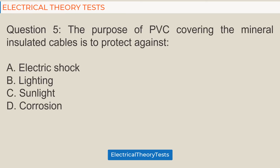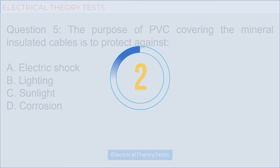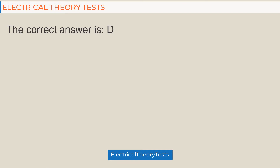Question 5: The purpose of PVC covering on mineral insulated cables is to protect against — a) electric shock, b) lightning, c) sunlight, d) corrosion. The correct answer is d) corrosion.